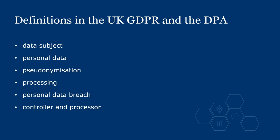These are the definitions we are looking at today. They are in Article 4 of the UK GDPR and Part 1 of the DPA. We will discuss the definition of a controller and processor at the end, but while we are discussing the other definitions, remember that the controller is the organisation responsible for the processing of the data.